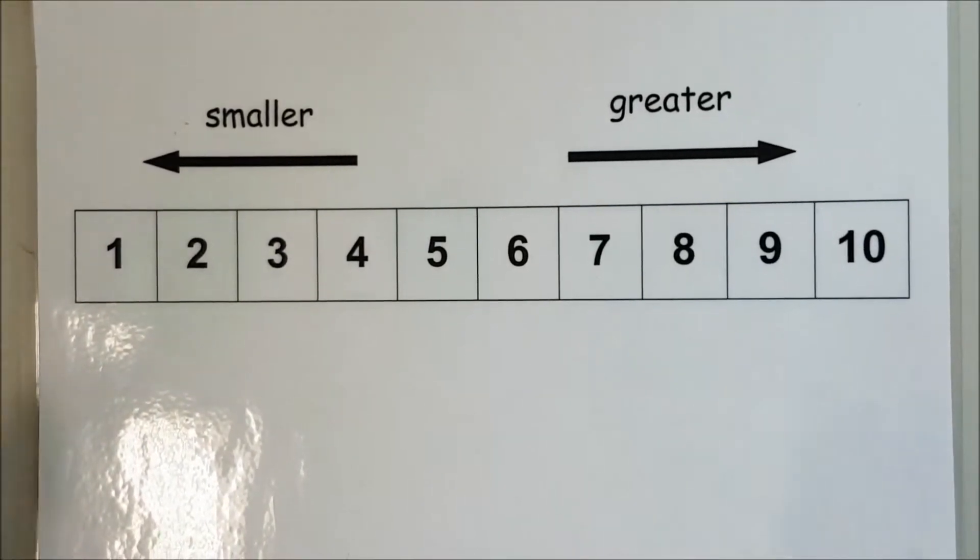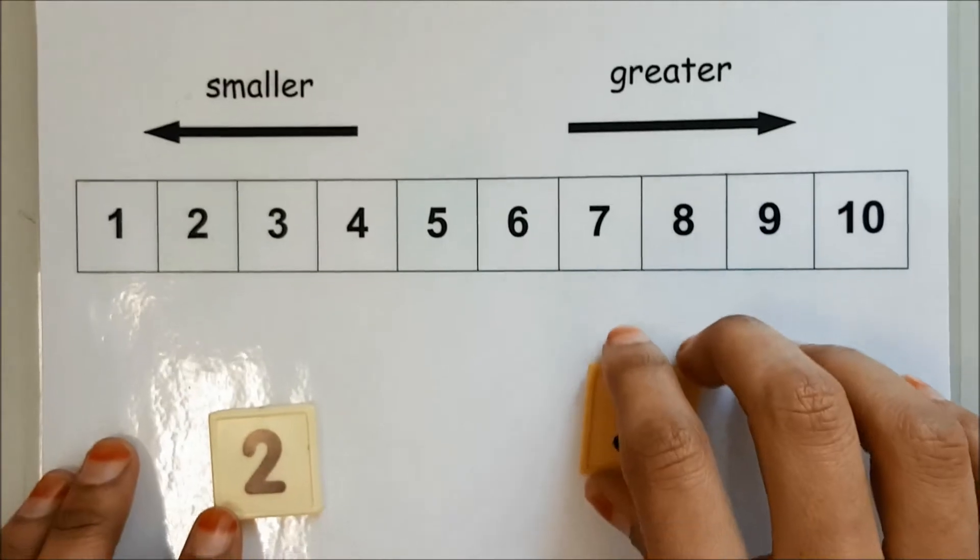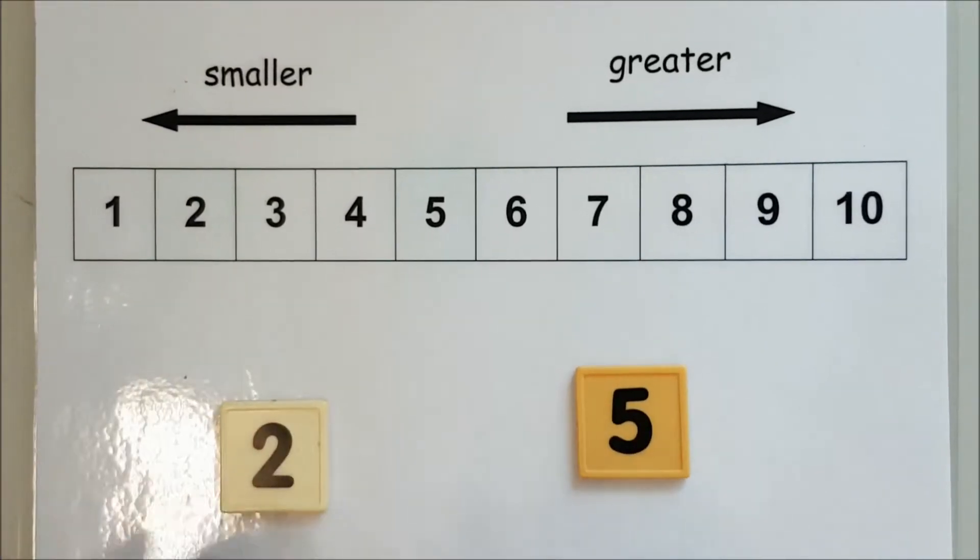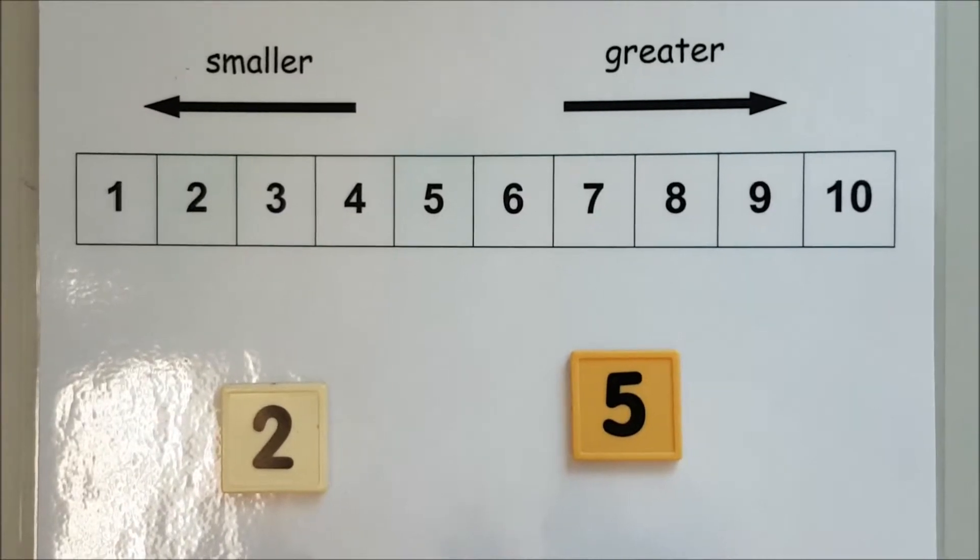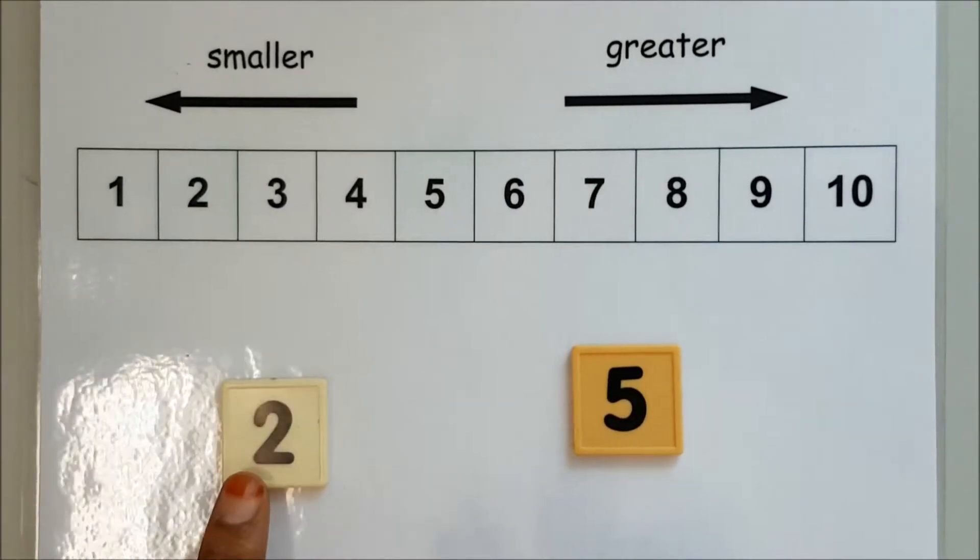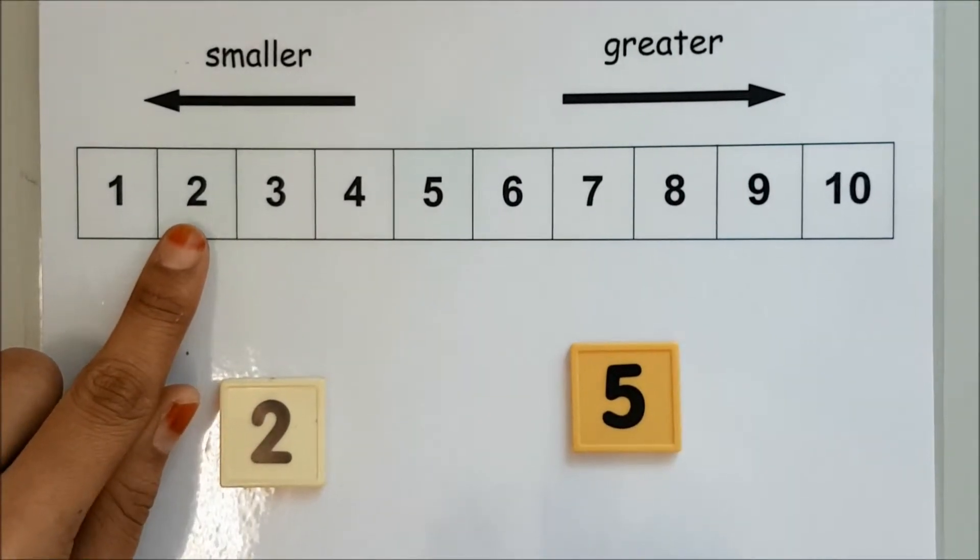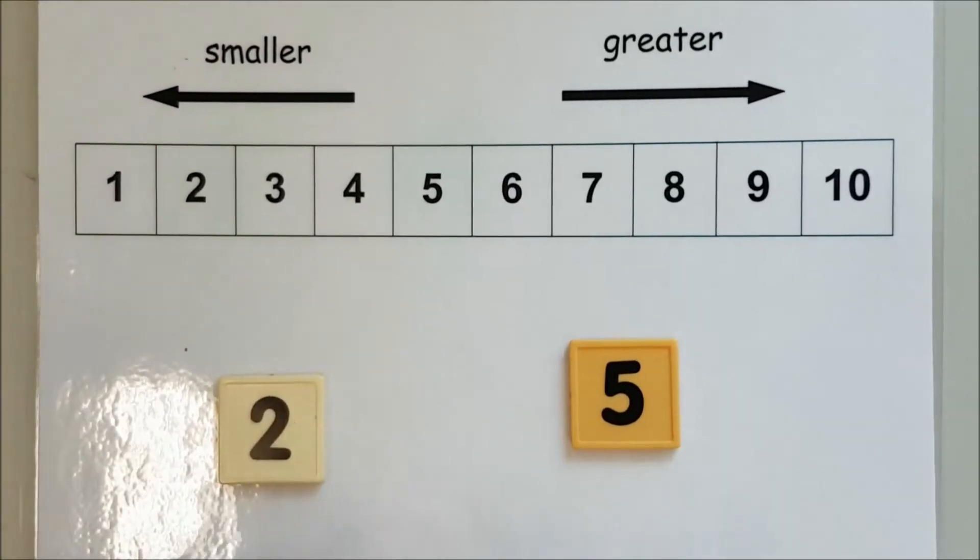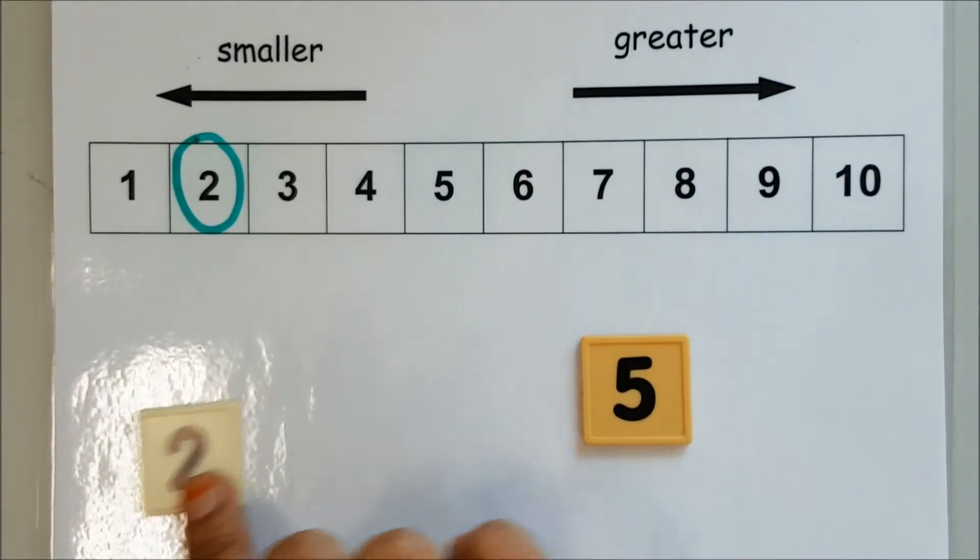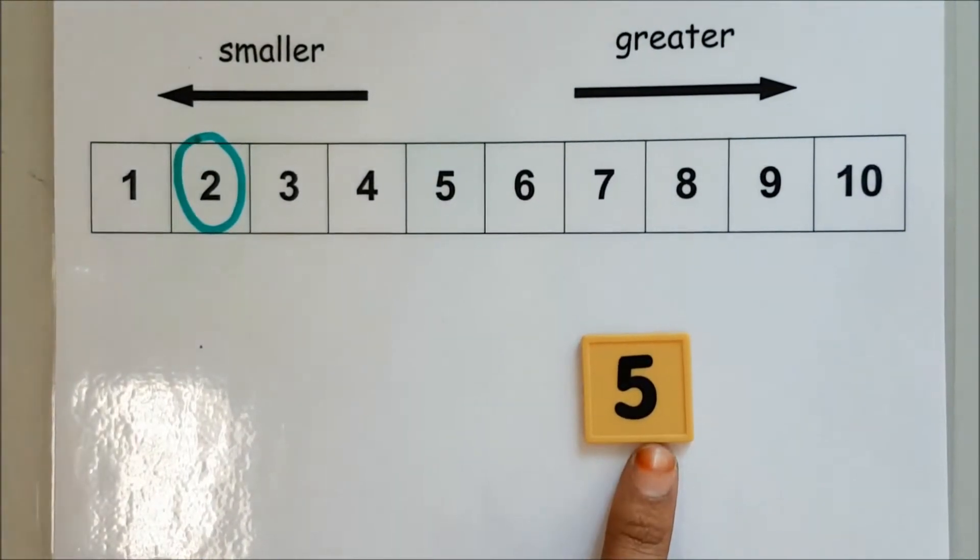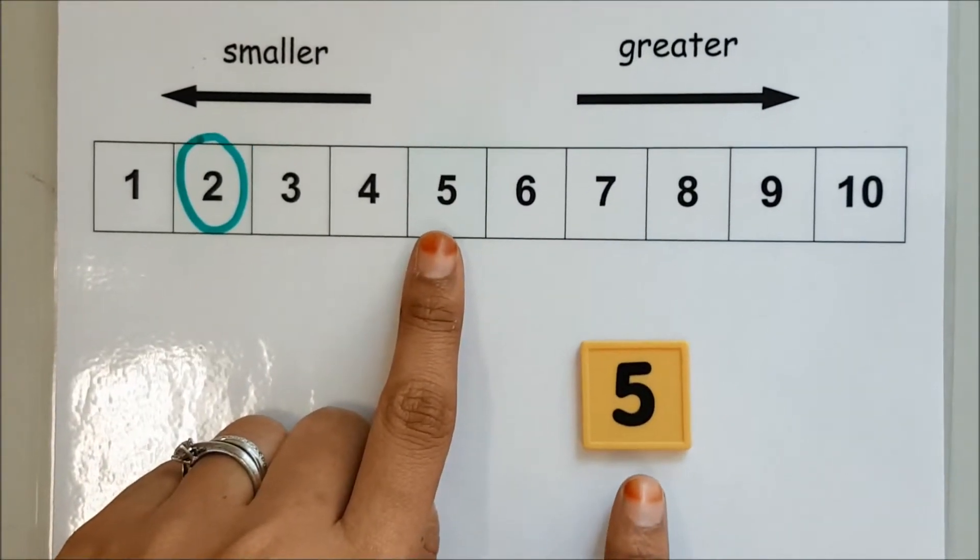Let's compare the numbers 2 and 5. Let's find out which is greater and which is smaller. 2 is here on the number tape. 5 is here on the number tape.